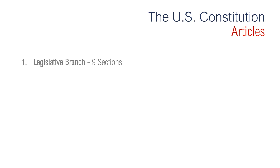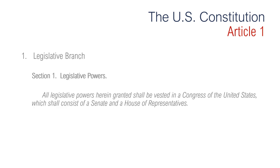Because of the amount of content we need to cover in Article 1, this article will take the longest to cover, so be patient. Section one of Article 1 says, 'All legislative powers herein granted shall be vested in a Congress of the United States, which shall consist of a Senate and a House of Representatives.' Short and sweet.